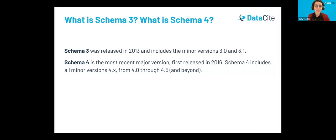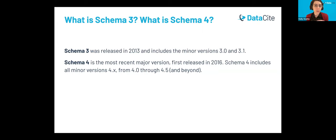In this next part of the webinar, we're going to go over the schema 3 deprecation plans and what repositories can do to prepare for these changes right away. I want to clarify what we mean when we say schema 3 and schema 4. Both are major versions of the DataCite metadata schema. Schema 3 was released back in 2013 and had two minor versions, 3.0 and 3.1. Schema 4 is the most recent major version, first released in 2016, and when we say schema 4, we're referring to all minor versions — 4.0 up to and including 4.5.